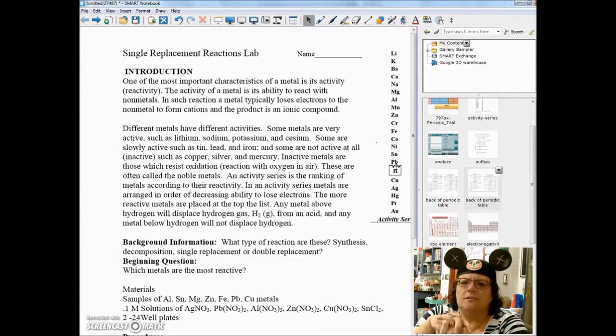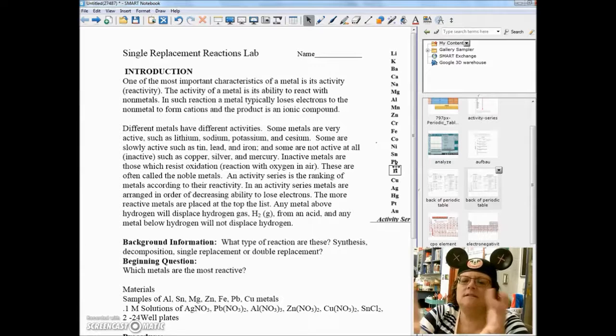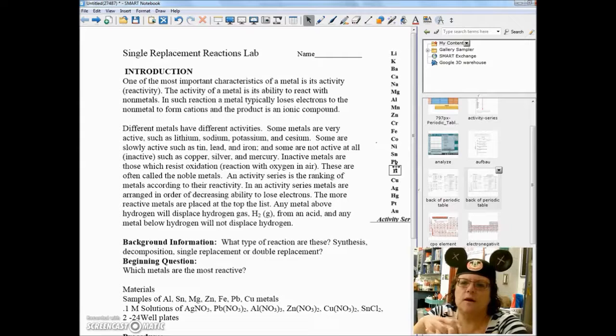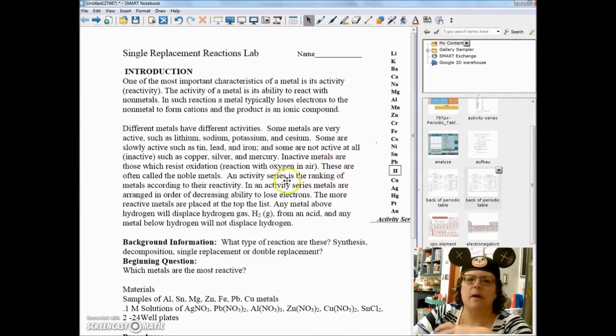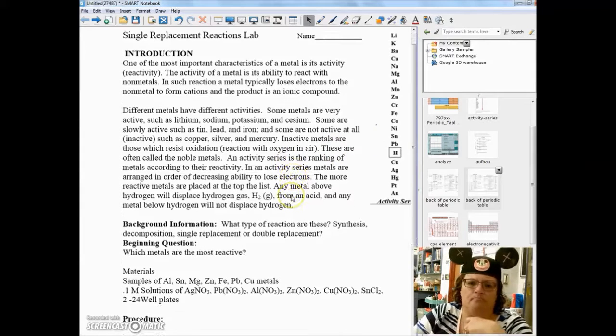Different metals have different activities. Some metals are very active such as lithium, sodium, potassium, and cesium. And we've seen those. We've seen videos of those reacting with water. Some are more inactive. An activity series is the ranking of the metals according to their activity. So we're going to test metals and we're going to rank them.